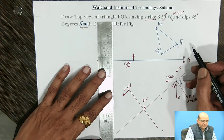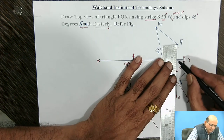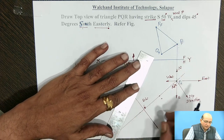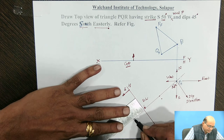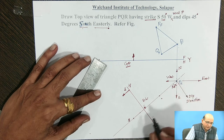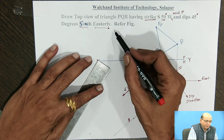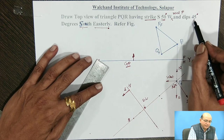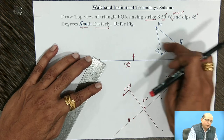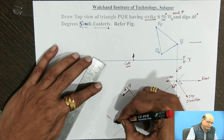First, the P point is transferred on this side on the projector of PH. The distance for the PF point is 22 millimeters from the HRP; we take that distance in the compass and transfer it on this side. This point is the P1 point, which is the projection of corner P on auxiliary plane number 1. A line parallel to HRP on this side will also show parallelism on the auxiliary side in the same way.